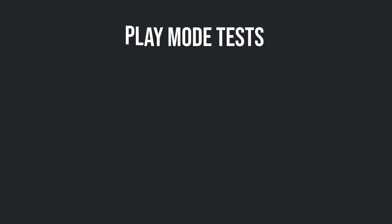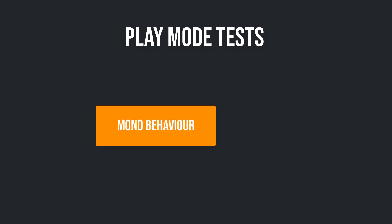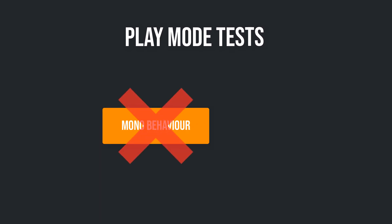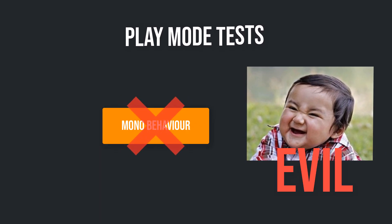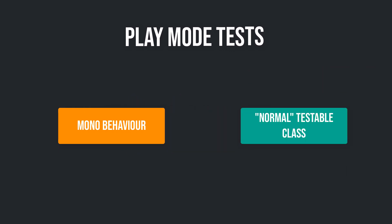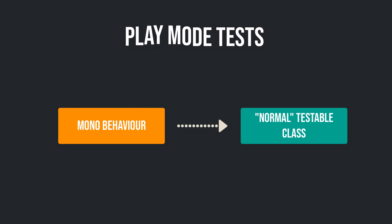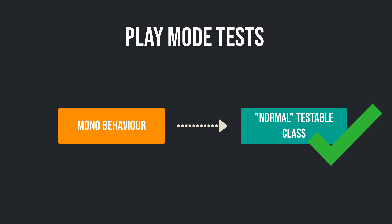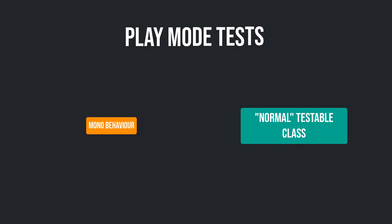You can write play mode tests for testing behavior over time. When you search the internet about testing MonoBehaviours, it's often said that you shouldn't test MonoBehaviours at all, and instead separate the logic from the MonoBehaviour class into a normal class so that your MonoBehaviour calls the other class. The other normal class can then be unit tested.